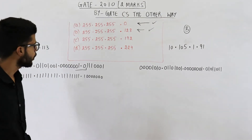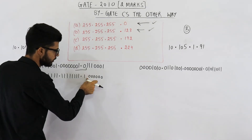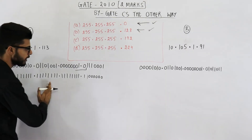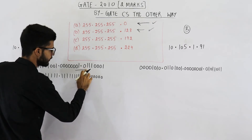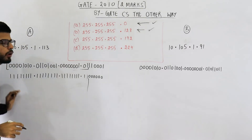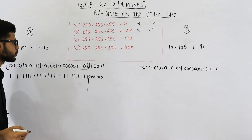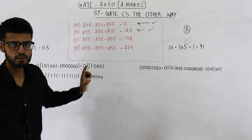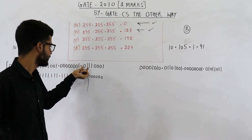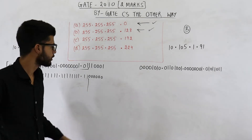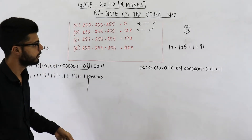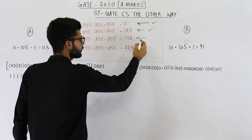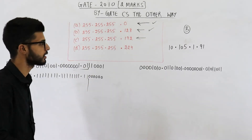Now let us analyze option C. Option C is 192. 192 means two ones followed by six zeros. This means the first two bits of the last octet of the IP address are part of the network ID. The first three octets are exactly the same — 10.105.1 for both. Now these two bits of the last octet are zero one for A as well as zero one for B. So option C will also work because the network ID of both A and B is still the same.